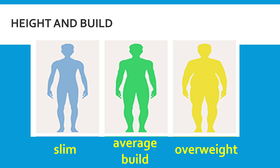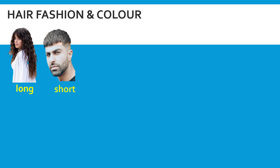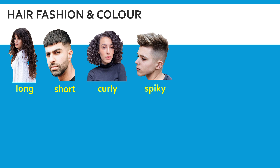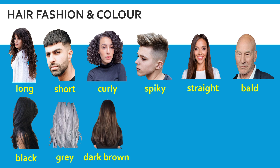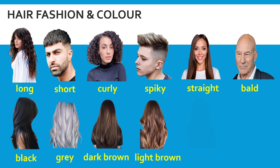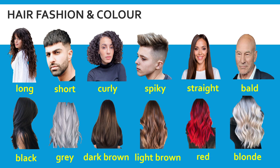Apart from height and build, we can also describe hair fashion and color. Words for hair fashion include: long, short, curly, spiky, straight, and bald if you have no hair. For hair colors, this lesson covers: black, gray, dark brown, light brown, red, and blonde.